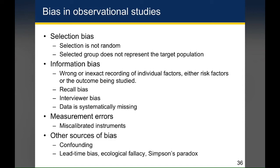Second, there's information bias. There may be wrong or inexact recording of individual factors — either risk factors or the outcome being studied might be recorded incorrectly. There's recall bias, where people may not remember things from the past. For example, you might ask someone how much coffee they drank ten years ago, and even if they answer one to two cups a day, that number may not actually be accurate because they may not truly remember. There's also interviewer bias: if the data is collected through an interviewer, the interviewer's biases might lead to leading questions that produce answers which don't actually reflect the respondent's true thoughts.